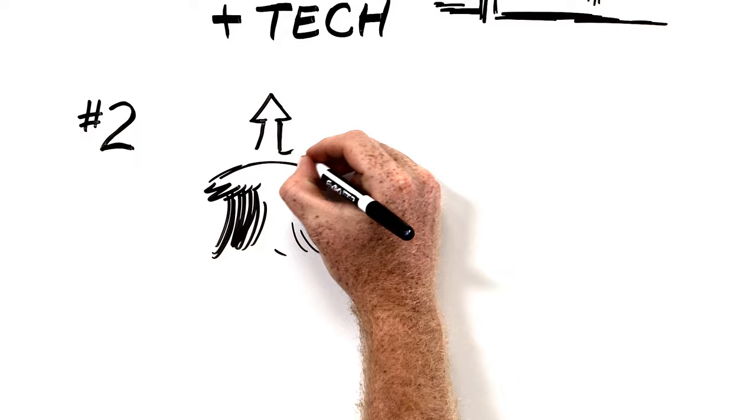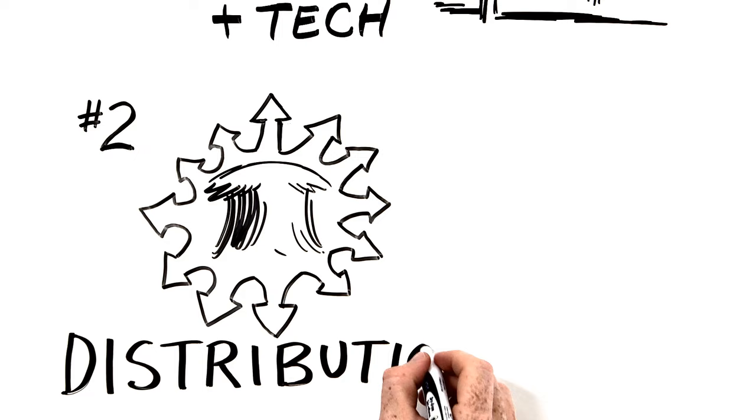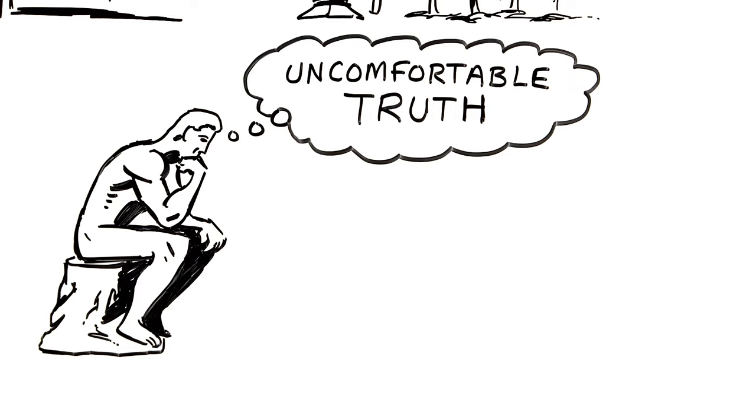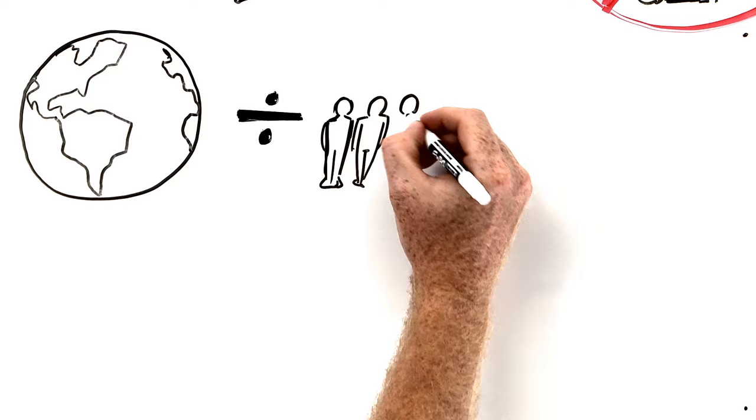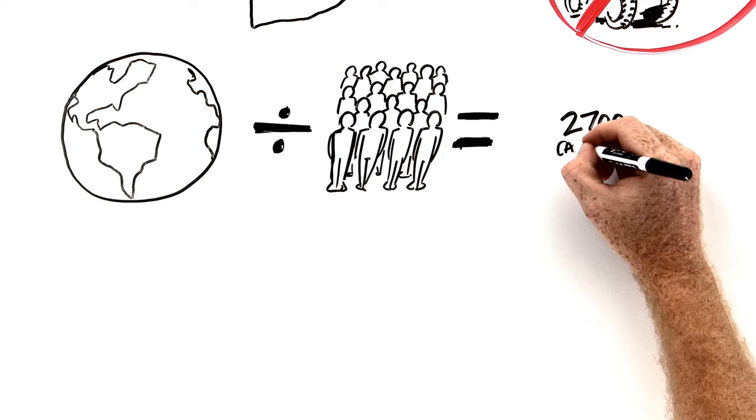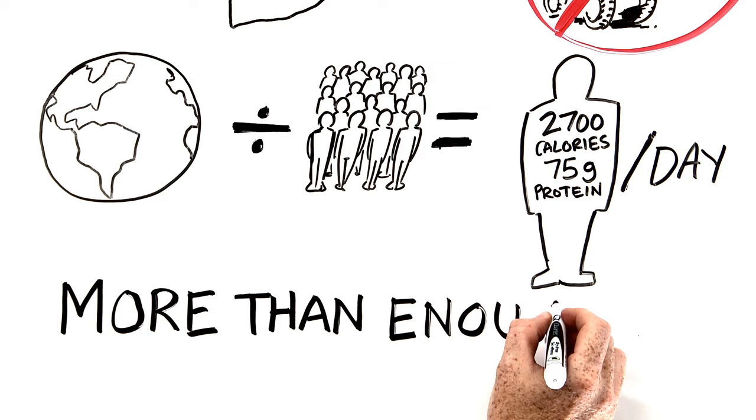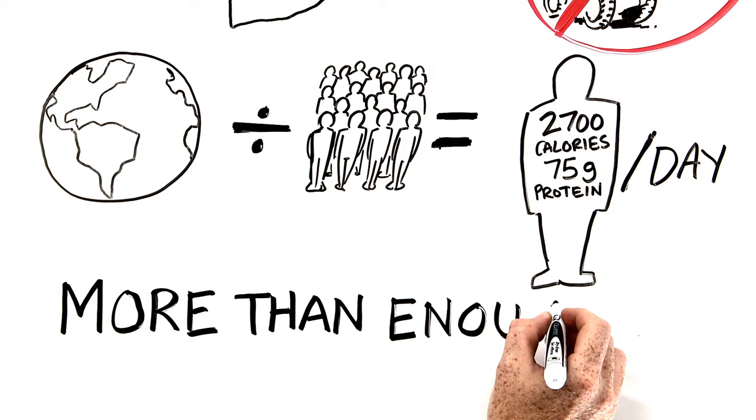Just using science and technology won't be enough, however. And this is where the second strategy comes in. We must do a better job at distributing the food we've got. To develop this strategy, we need to consider an uncomfortable truth about today's food system. If you take all the food on the planet and divide it equally by all the people on the planet, there is plenty. About 2,700 calories per person per day and 75 grams of protein per person per day. That's more than enough.